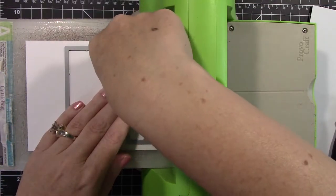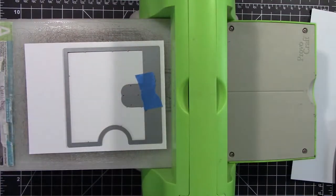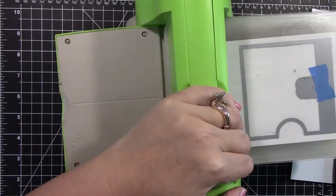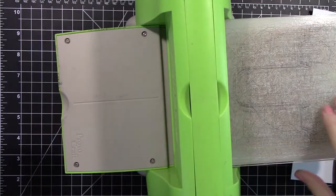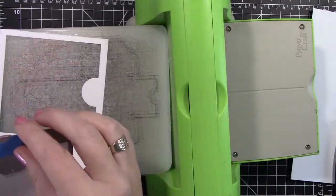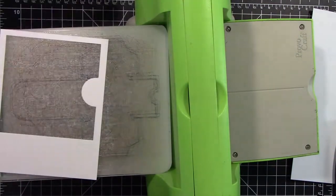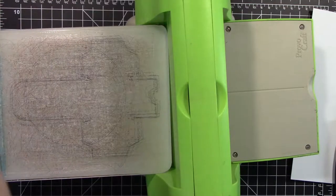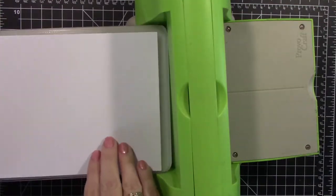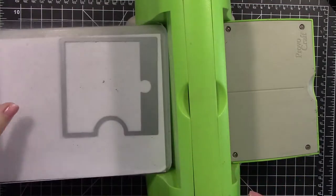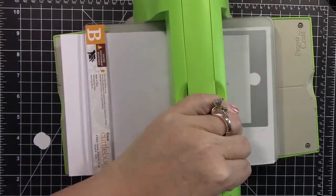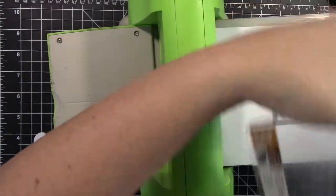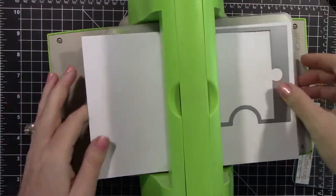So I'm attaching that Pumpkin Add-On with tape, fits in like a little puzzle, cutting that out of my Neenah Classic Crest Solar White cardstock. And then I will also be cutting out a back piece. That is the front piece.